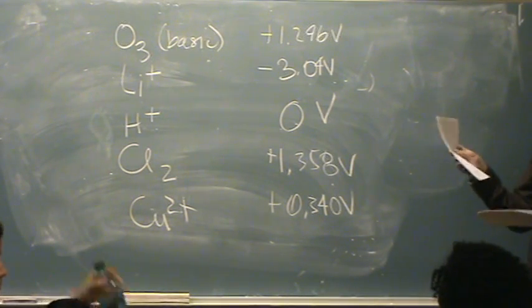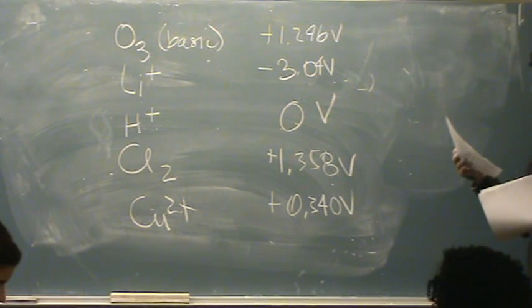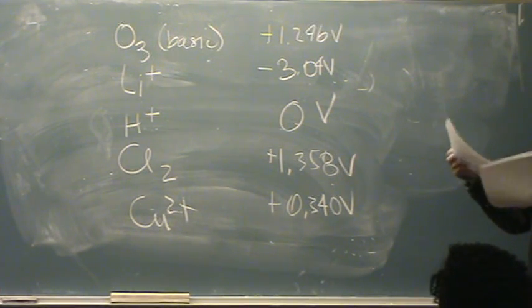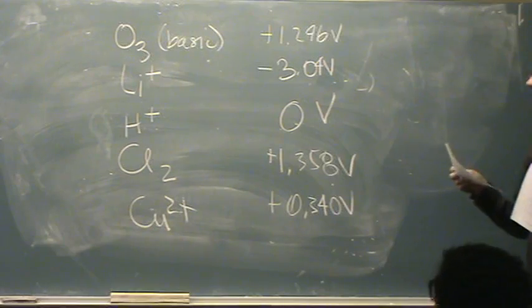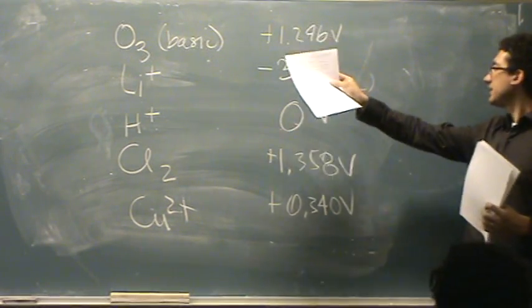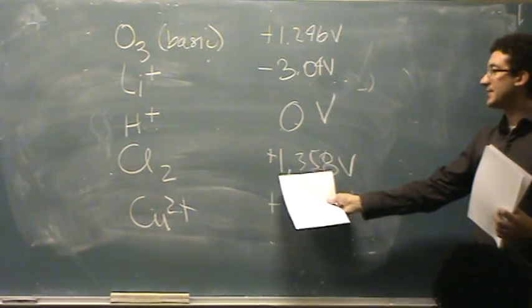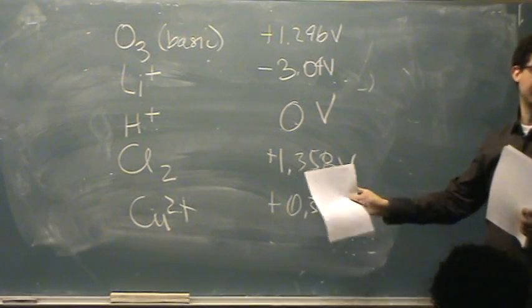So you're usually assuming acidic unless it's listed otherwise. Okay. And you'll see for the table we give you in this book, it's the largest part of the reduction table. So you can compare directly basic to acidic. You don't have to convert. There's no conversion necessary.